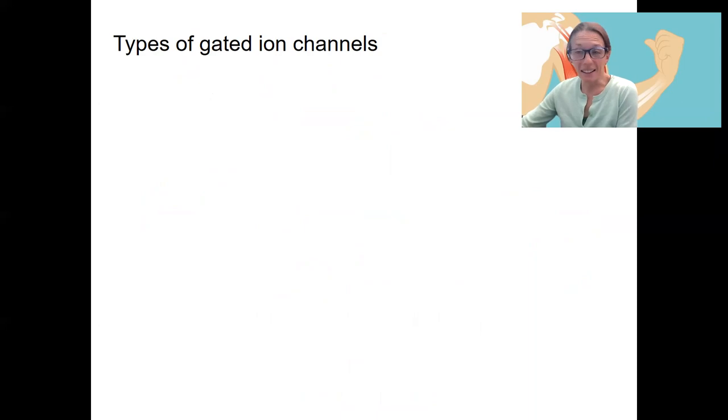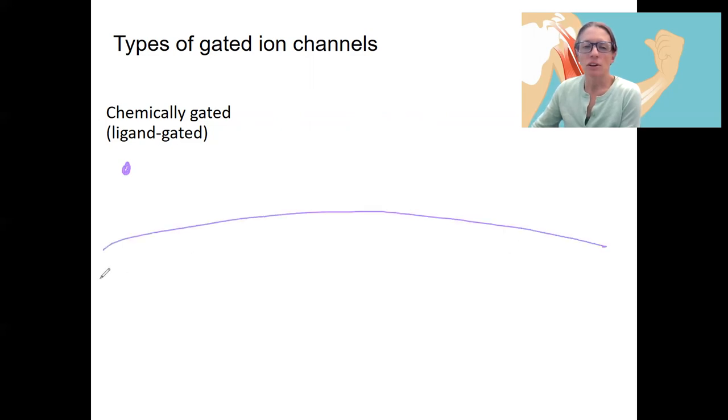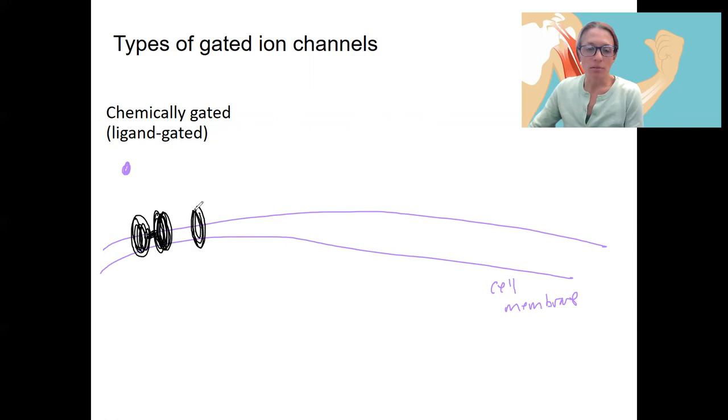One is a ligand binding to a channel. So you can have a ligand. Let's actually just draw these here. Here's my cell membrane. That's a ligand. Okay. Then we've got in the membrane, a channel. It's closed. But when that ligand binds to it, it's going to open. Let's add the ligand that needs to bind. So this is over time, T1, T2. A ligand binds and opens the channel.